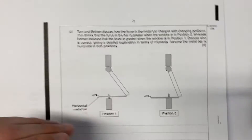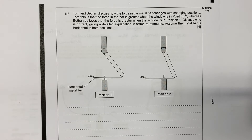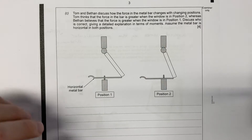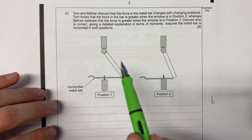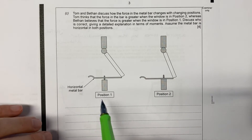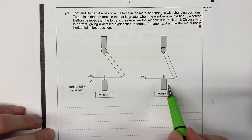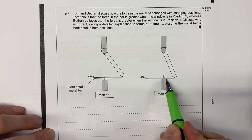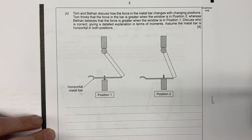Moving to the next part of the question, we've got a nice argument here between Tom and Bethan — read through that. The key question is: which position gives the greater force acting on the metal bar? Are we going to get more force or less force in position one or position two?